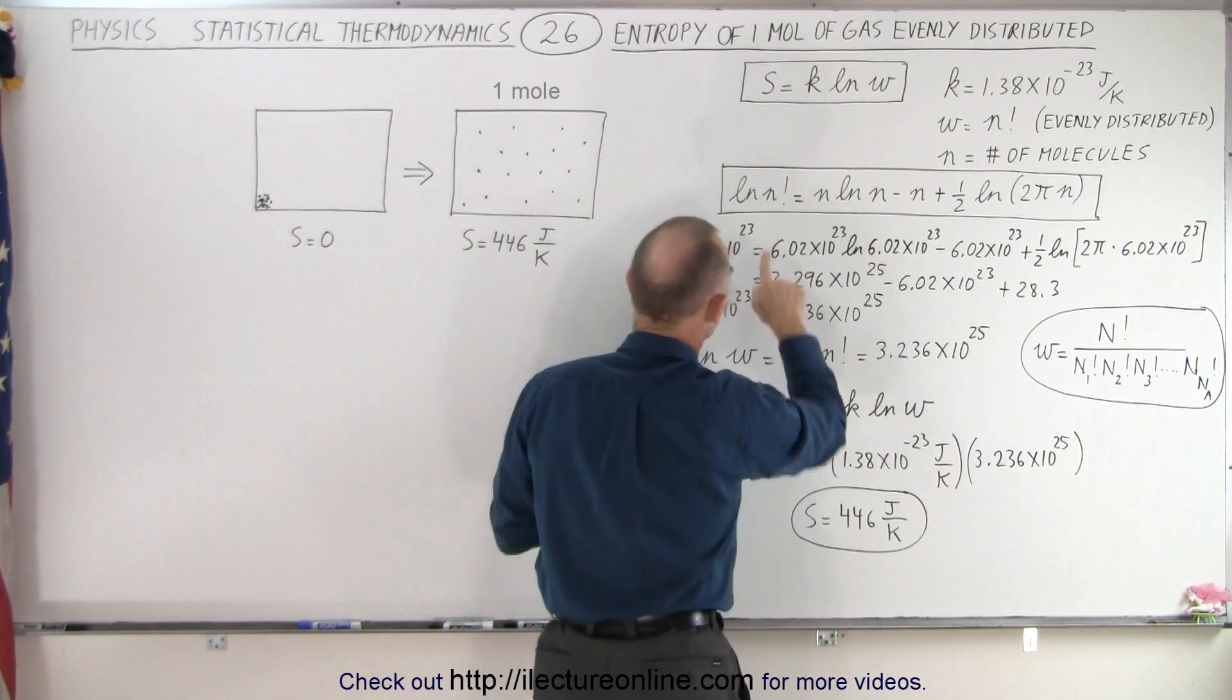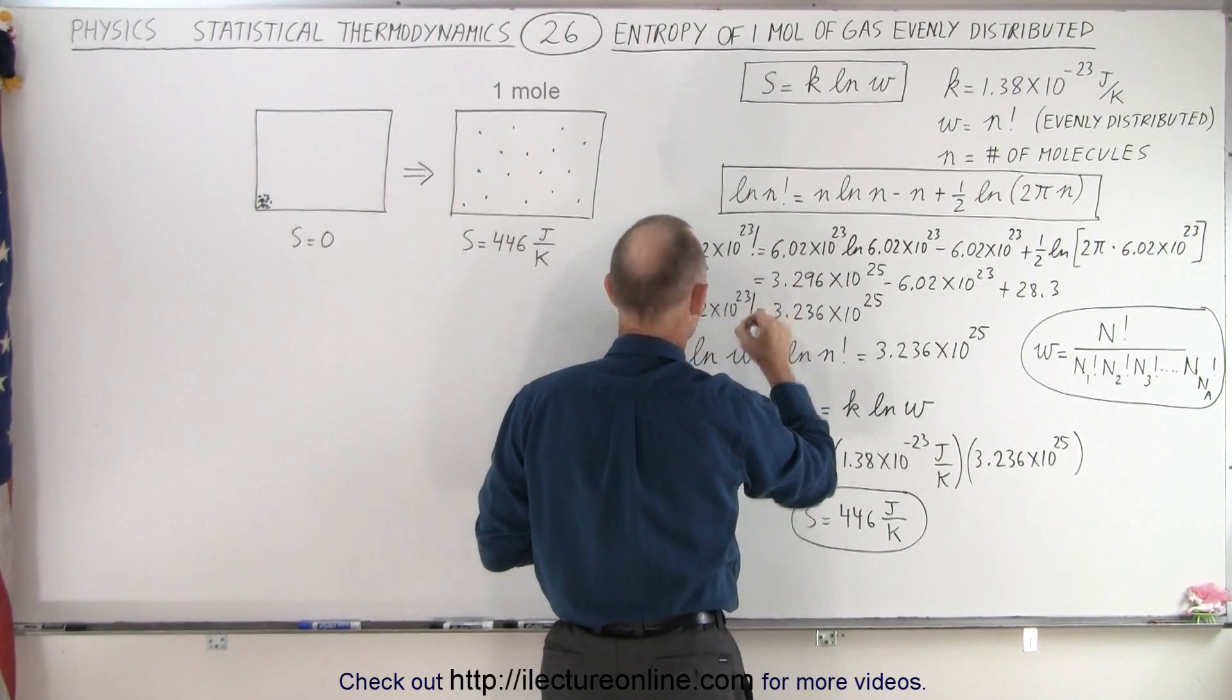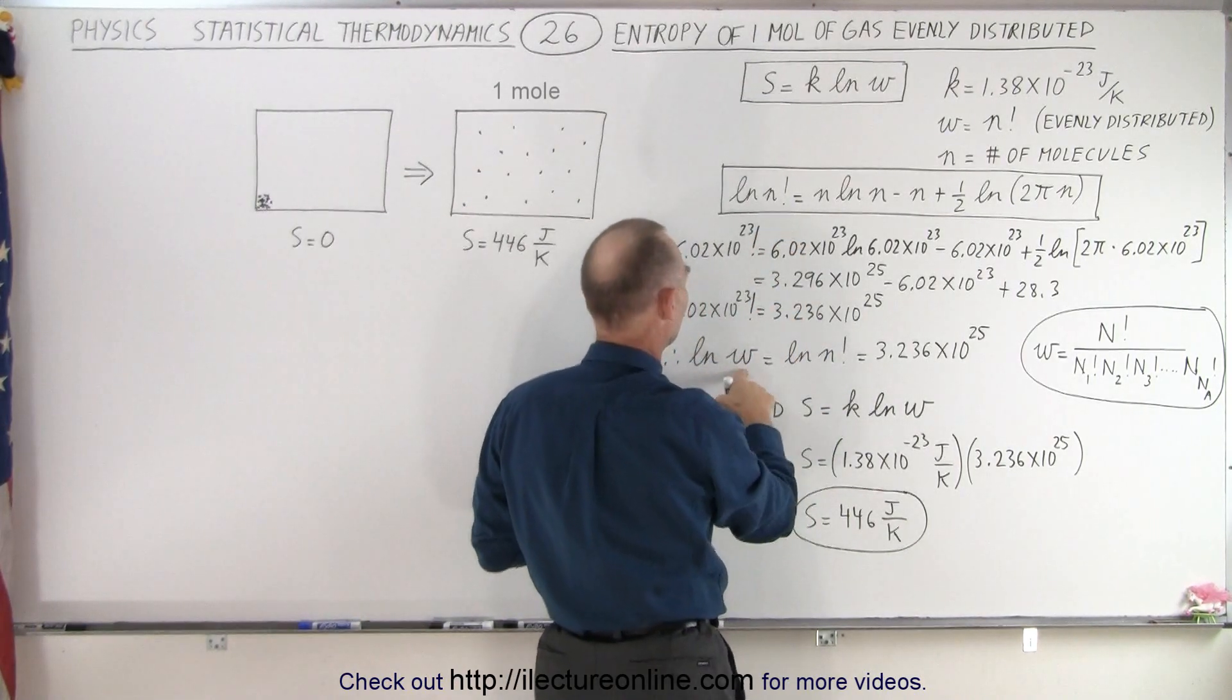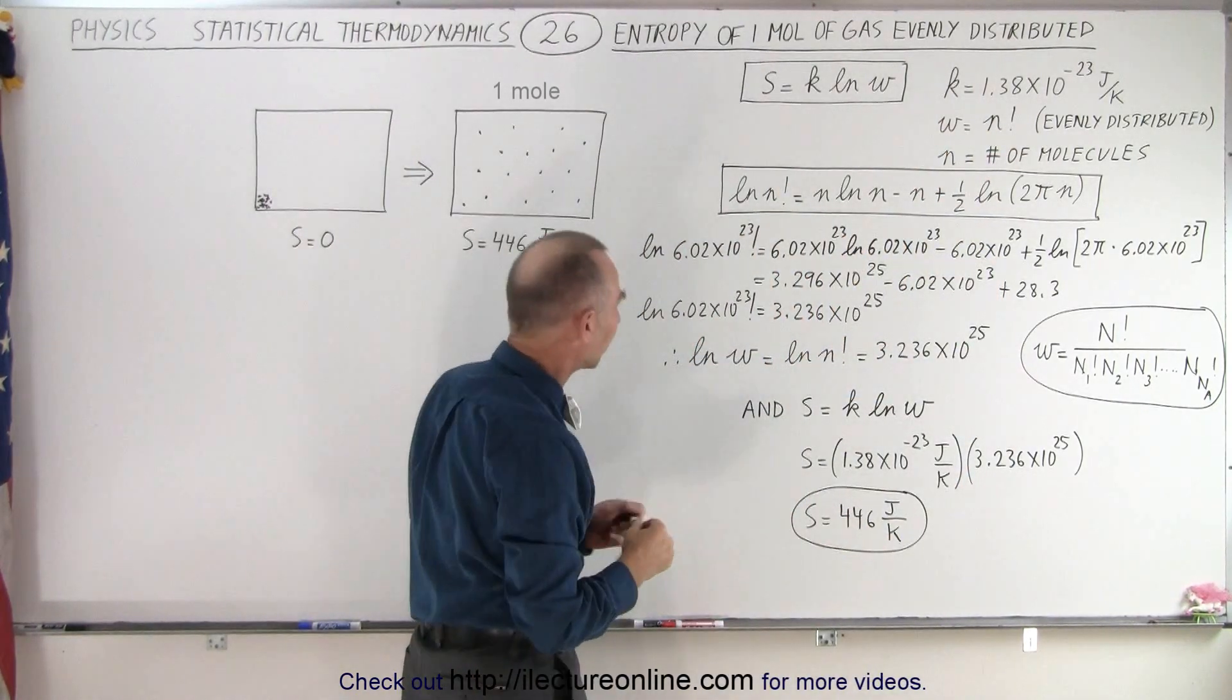Oh, I forgot to put one thing in there. Of course I need the factorial in there. And let me put the factorial in there. And so the natural log of w, because w is n factorial, so I forgot the factorial symbol in there.